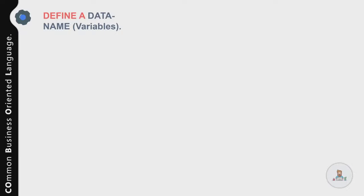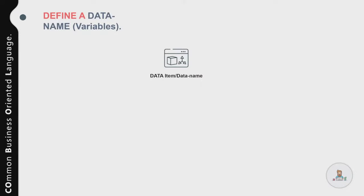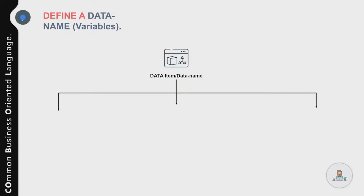Now let's talk about how to define a data name in COBOL. Variables in COBOL are called data names, also referred to as data items or elementary items. By definition, a data name or identifier is the name used to identify the area of memory reserved for a variable. Every variable used in a COBOL program must be defined in the Data Division. The rule for creating a data name is that you can use numbers, letters, and hyphens with a maximum of 30 characters.